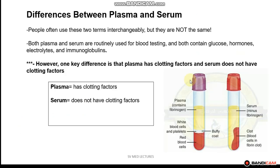People often use the terms plasma and serum interchangeably, but they are not the same. Both plasma and serum are routinely used for blood testing and both contain glucose, hormones, electrolytes, and immunoglobulins.